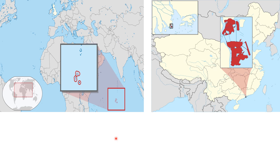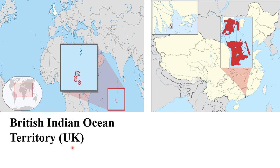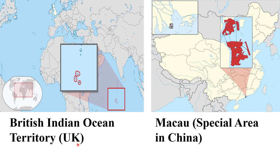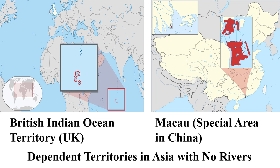In Asia, there are two dependent territories without rivers. The first is the British Indian Ocean Territory, an overseas territory of the United Kingdom, which has no permanent rivers. The second one is Macau, a special administrative area inside China, which also has no permanent rivers.